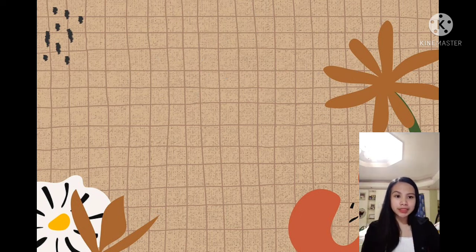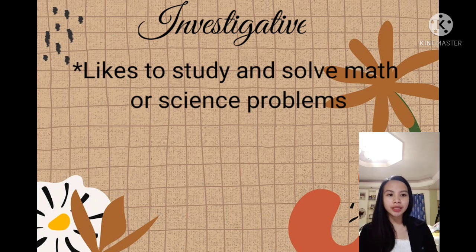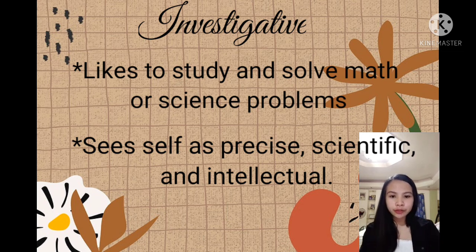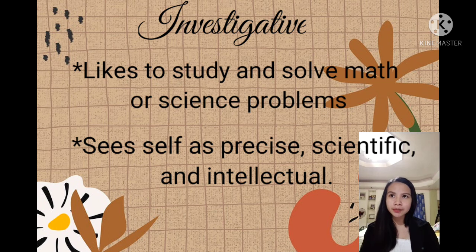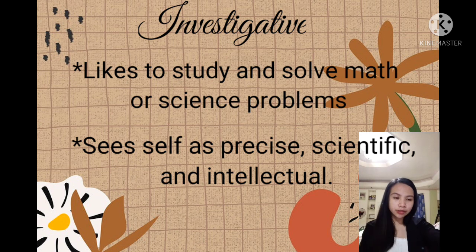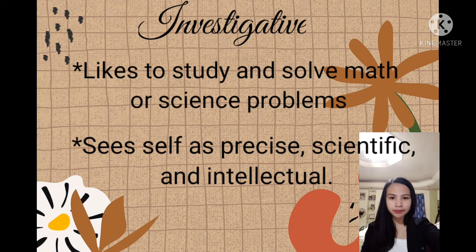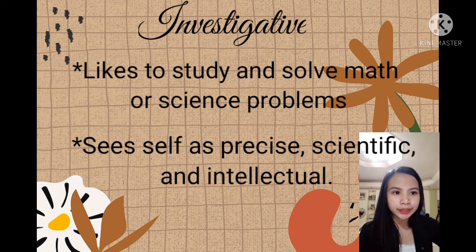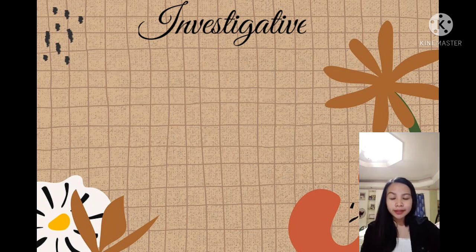Next is investigative: likes to study and solve math or science problems. Generally avoids leading, selling, or persuading people. Values science and sees self as precise, scientific, and intellectual. These are people who like the challenge of knowledge or intellect, found in fields related to science like astronomy and other fields related to new discovery. People under investigative like to observe, learn, investigate, analyze, research, evaluate, or solve problems — they enjoy science.